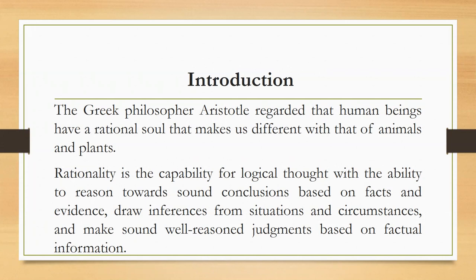And the last soul is the rational soul. As human beings, we have all three types of soul: the vegetative soul, the sensitive soul, and the rational soul. We have the vegetative soul because we can grow. The sensitive soul allows us to feel or to perceive. And finally, the rational soul allows us to think and to reason out.